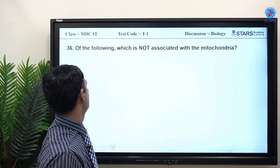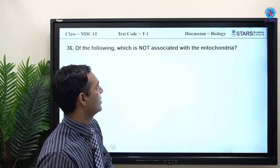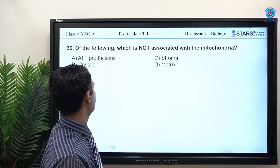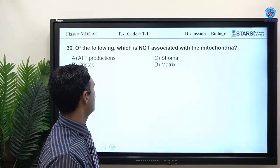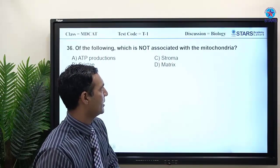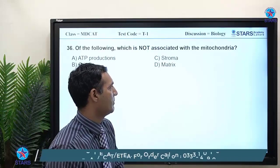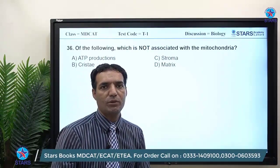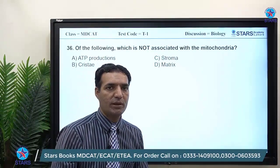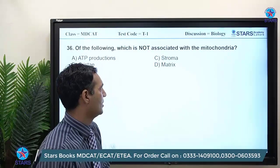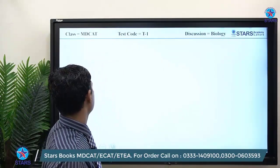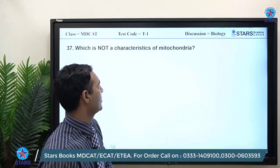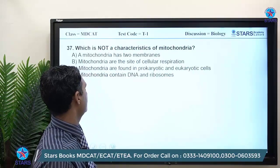MCQ 36: which of the following is not associated with mitochondria? ATP production and cristae occur in mitochondria. Stroma is not found in mitochondria — it has a matrix. Stroma belongs to the chloroplast, where the dark reaction (Calvin cycle) takes place.